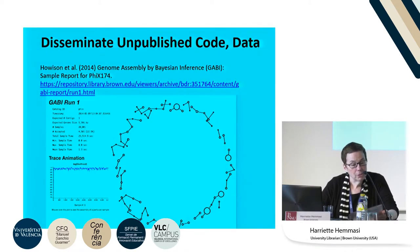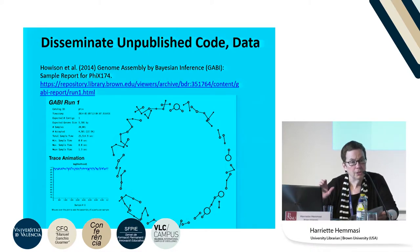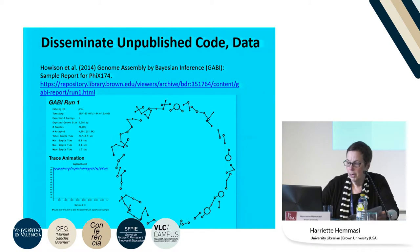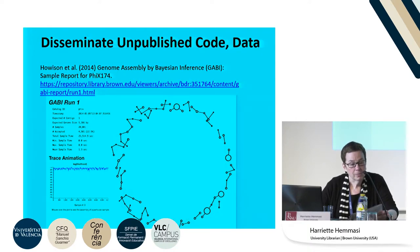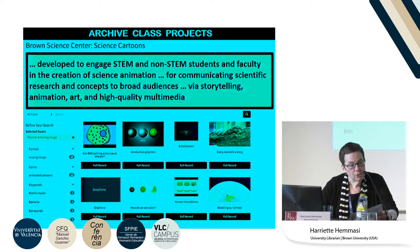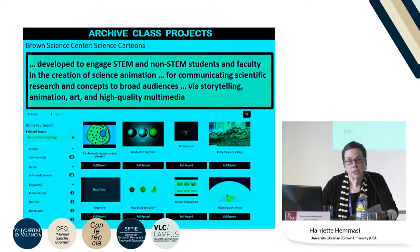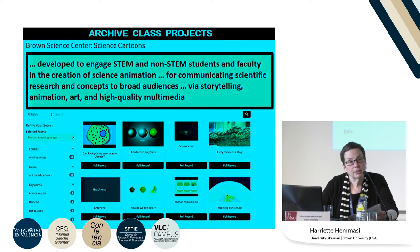We also disseminate unpublished code and data. This is an example of an interactive visual that the publisher was not willing to publish because they were afraid that the technology might not be sustainable over time. And so again, the library published this interactive graph and chart. We also use the repository to archive class projects — in this case, science cartoons developed to engage STEM and non-STEM students and faculty in the creation of science animations.